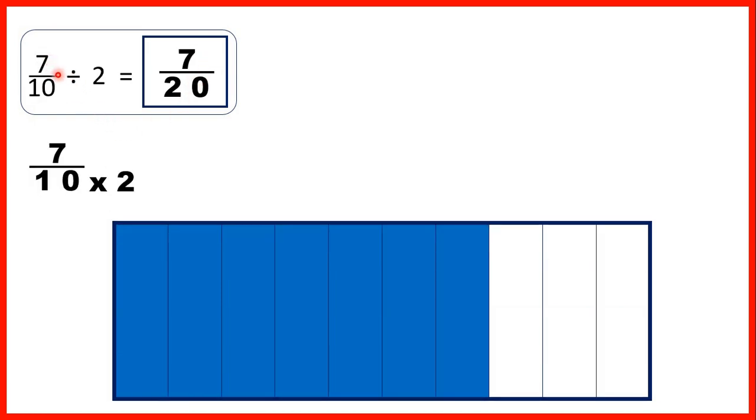Then we had 7 tenths divided by 2. Remember dividing by 2 is the same as finding half of something. If we color half of what were our 7 tenths in red, you can see that the fraction bar is now split into 20 pieces and we have 7 of those pieces shaded red, so that's 7 twentieths.